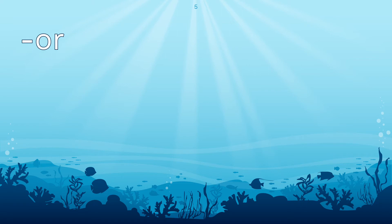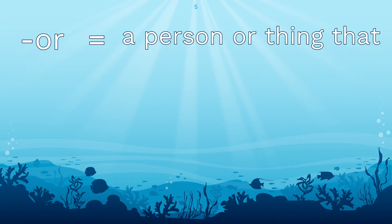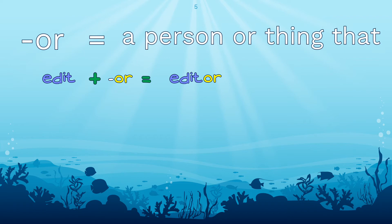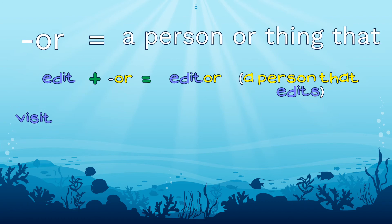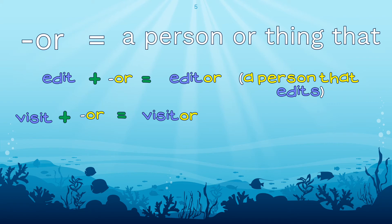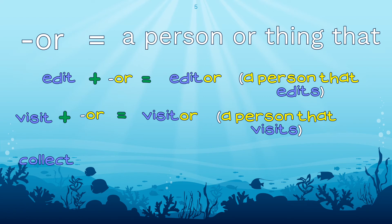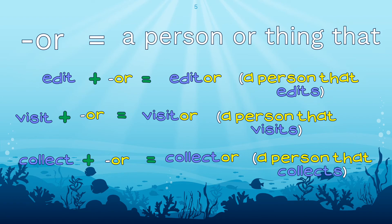The next suffix we will be looking at is the suffix -or, which means a person or thing that. We have the word edit, and we add the suffix -or to it, we make the word editor, which means a person that edits. In the base word visit, by adding the suffix -or, we make the word visitor, which means a person that visits. And in the base word collect, by adding the suffix -or, we change the word to collector, which means a person that collects.